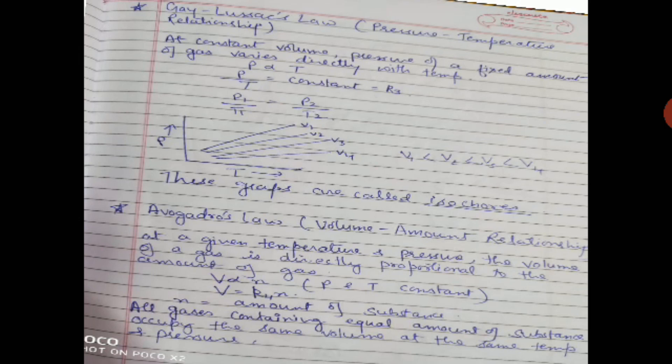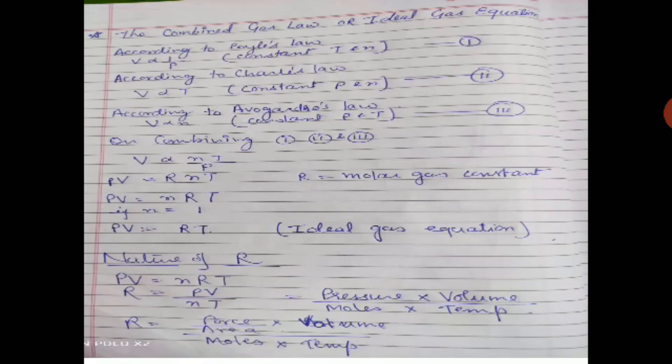Avogadro's law gives the volume-amount relation: at a given temperature and pressure, the volume of a gas is directly proportional to the amount of gas, V ∝ n. All gases containing equal amounts of substance occupy the same volume at the same temperature and pressure. Combining these gas laws, according to Boyle's law V ∝ 1/P, Charles's law V ∝ T, and Avogadro's law V ∝ n, we get V ∝ nT/P, which gives the ideal gas equation PV = nRT.